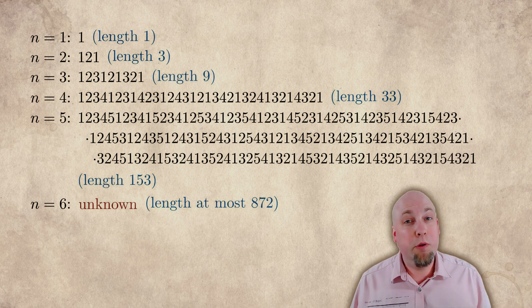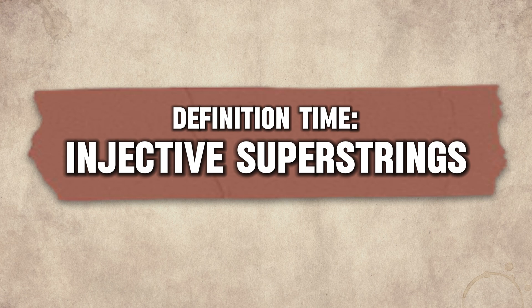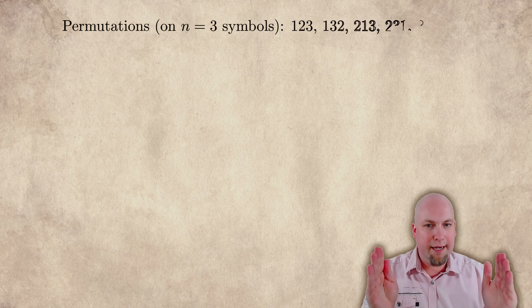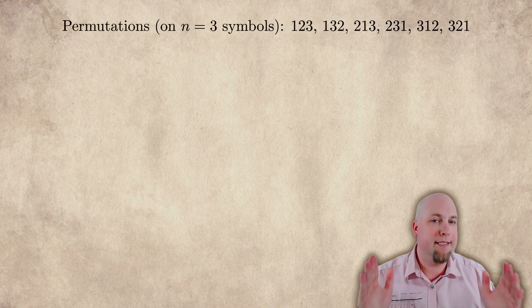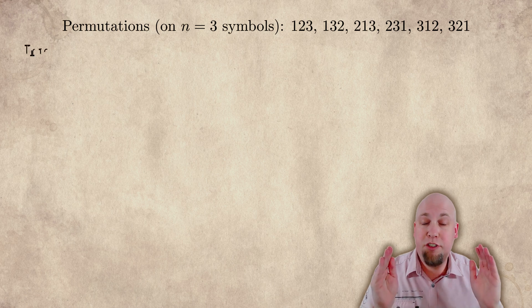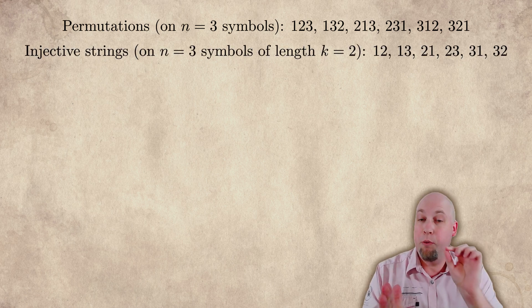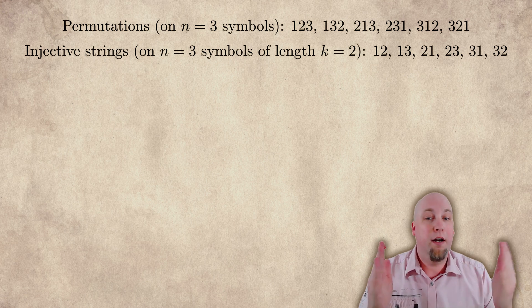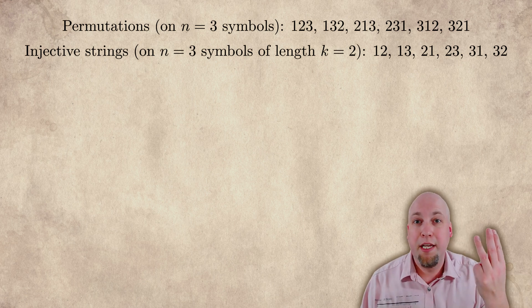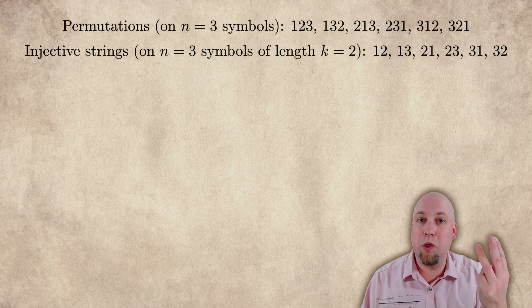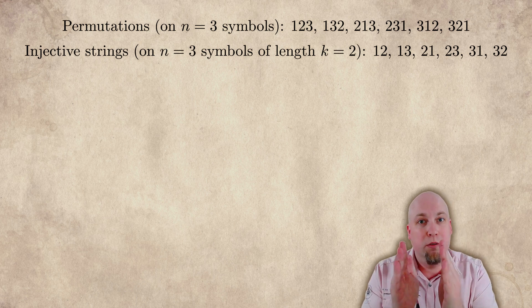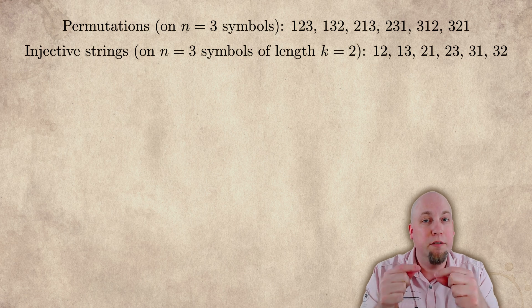What I want to do in this video is look at a generalization of super permutations called injective super strings. An injective super string comes from relaxing the notion of a permutation. In a permutation, you have n symbols and strings of length n, and every one of those n symbols appears exactly once. In an injective string, we instead don't require that the length of the string equals the number of symbols, but we do still require that the symbols in the string are distinct.